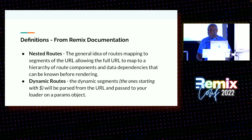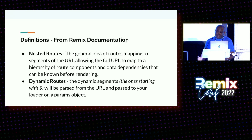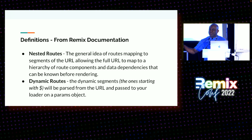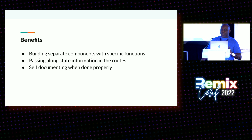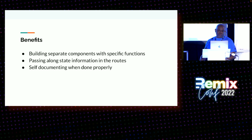So I translate that to say: I have a route, it has state, and hopefully it documents what it does. That's how I look at it. For dynamic routes, they say the dynamic segments — the ones starting with the dollar sign — will be parsed from the URL and passed to your loader on the params object. That's assuming you've already read about what params objects are and understand what a loader is. So I translate that to: the thing with the dollar sign, you can get inside your code. One of the benefits I found with nested routes and parameterized routes is you can build separate components with specific functions, and passing state along in the URL can be intuitive and self-documenting when done properly.